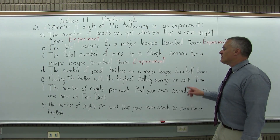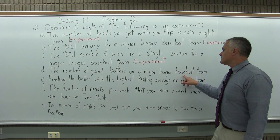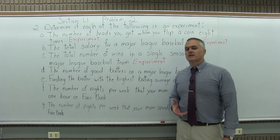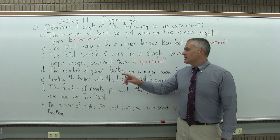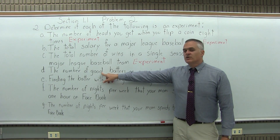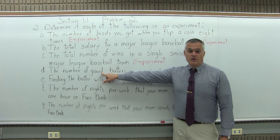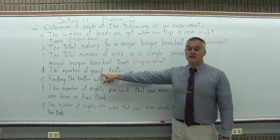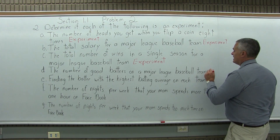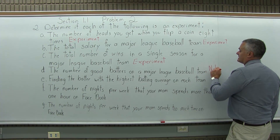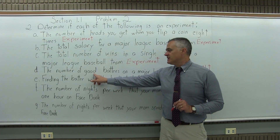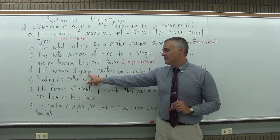Part D: the number of good batters on a major league baseball team. This is not an experiment, because what qualifies as a good batter can be different from one person to another. So now you are starting to involve opinion, which makes part D not an experiment, because it involves opinion in terms of what's a good batter.